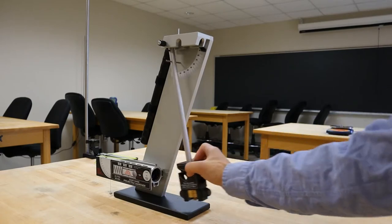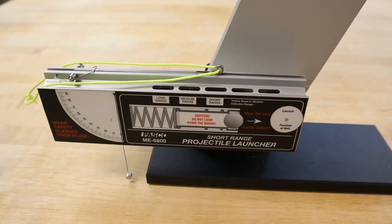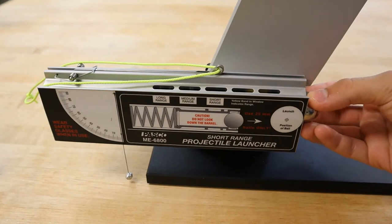Next, we will lock the pendulum arm out of the way and load the projectile by placing it in the end of the spring gun launcher.